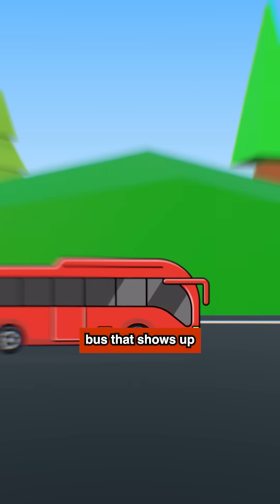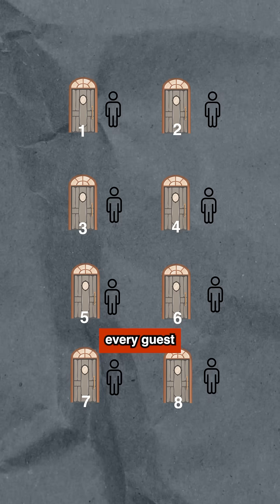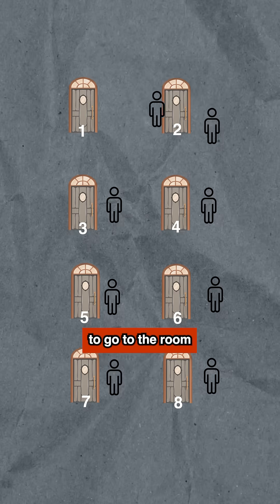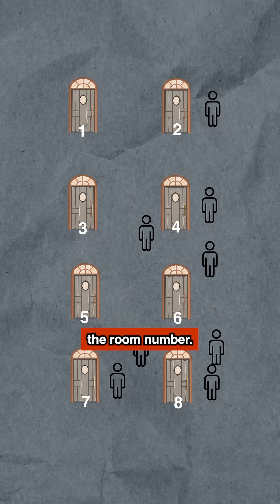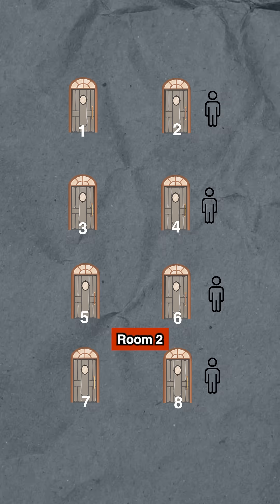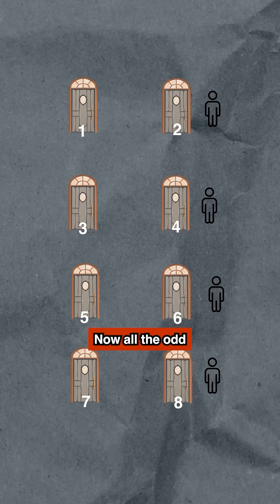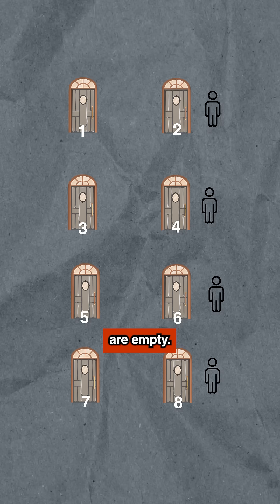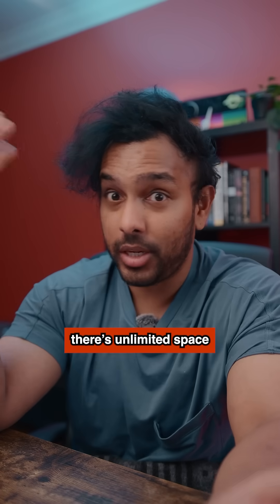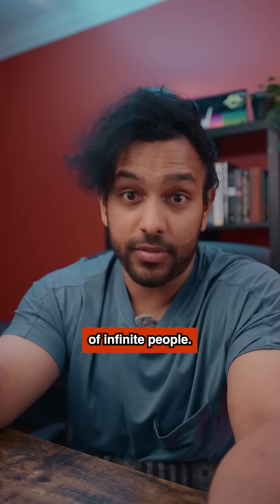Now imagine a bus shows up with infinite guests. What do you do? You tell every guest to go to the room that's double their room number — so room one goes to room two, room two goes to room four. Now all the odd-numbered rooms are empty, and there's unlimited space for the bus of infinite people.